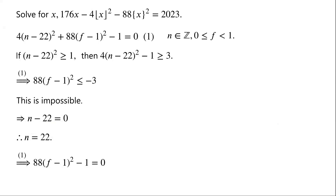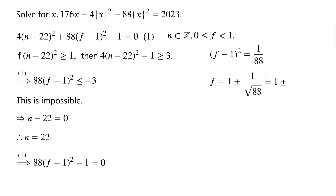Then from equation 1, we know that 88 times (f minus 1) all squared minus 1 is equal to 0. So (f minus 1) all squared equals 1 over 88. So f equals 1 plus or minus 1 over the square root of 88, which is equal to 1 plus or minus the square root of 22 over 44.